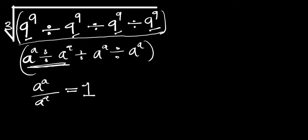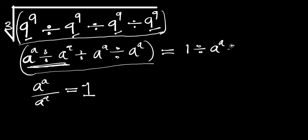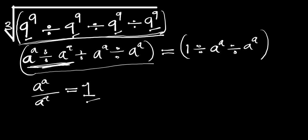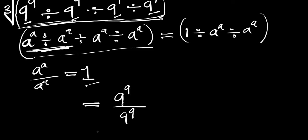So if a^a divided by a^a equals 1, that means the whole expression becomes 1 divided by a to the power of a, divided by a to the power of a. We have inserted 1 where those first two terms were. Now this is the same trick we are going to use here. We concentrate on the first two terms: 9 to the power of 9 divided by 9 to the power of 9, which gives us 1.